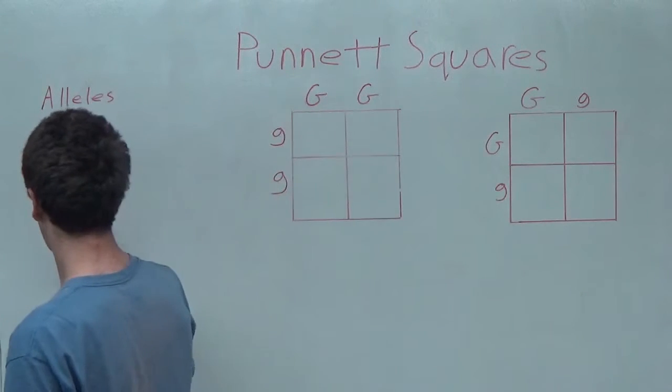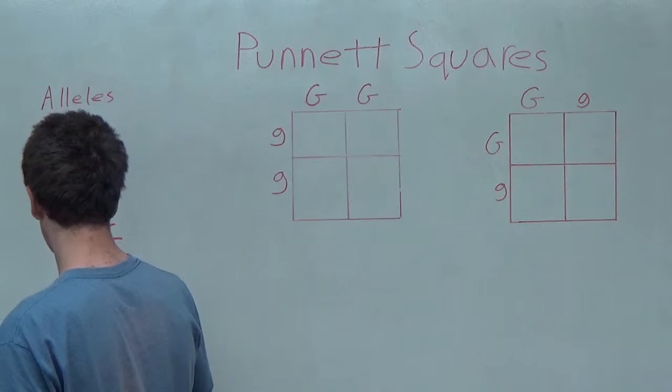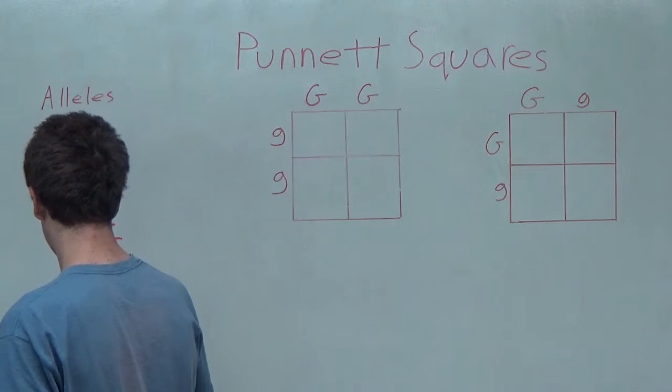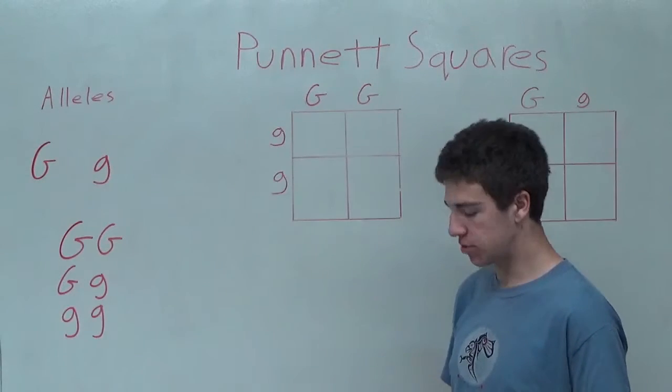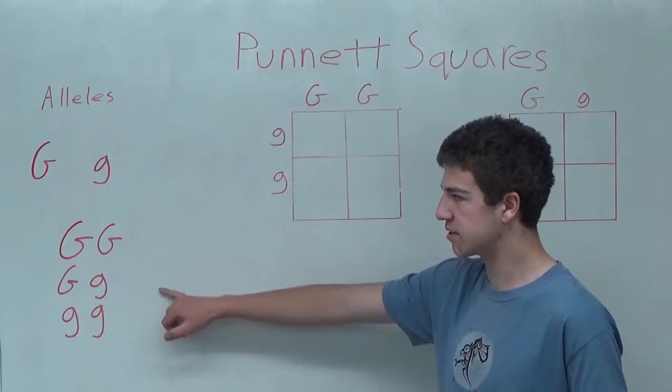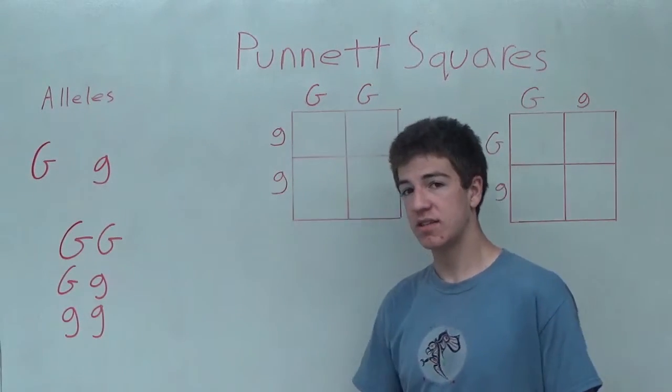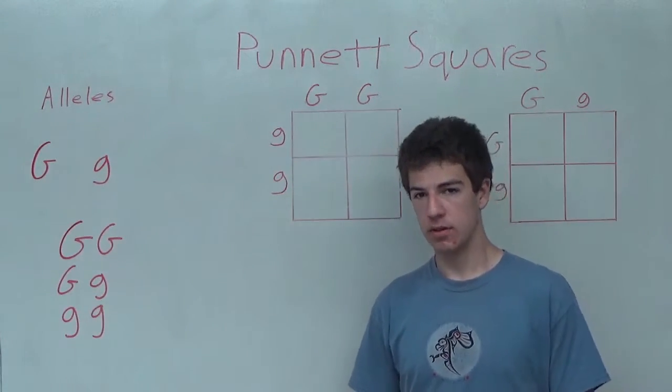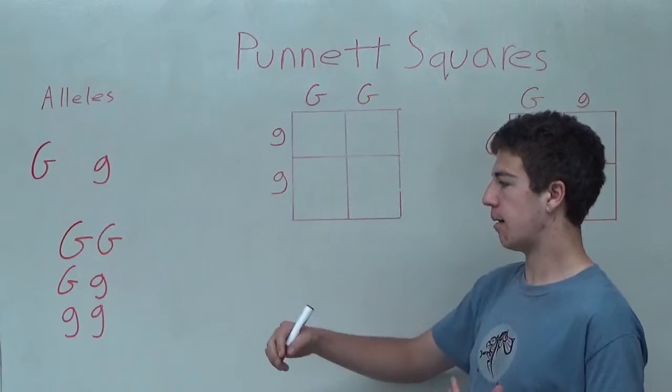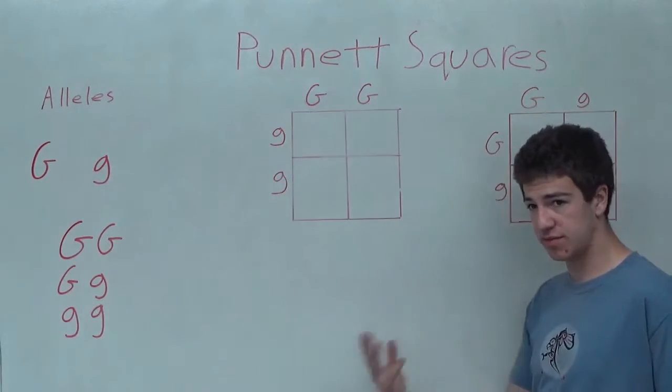And they are two uppercase letters, one uppercase letter and one lowercase letter, and two lowercase letters. Now as you can see, these two both have presence of a dominant allele, the uppercase G. Since it is a dominant allele, it will present the trait of the dominant allele. This is an example we'll do in this video.